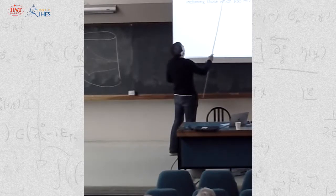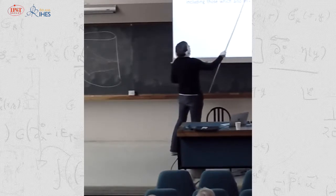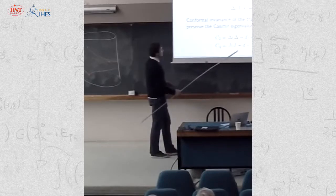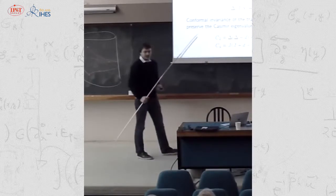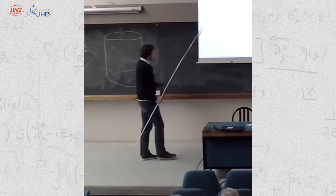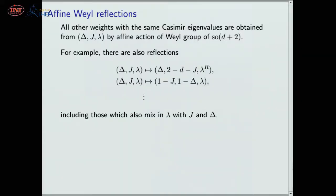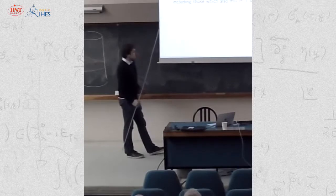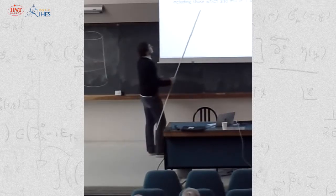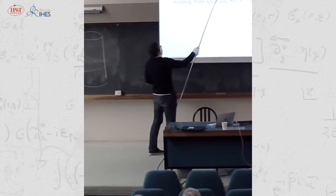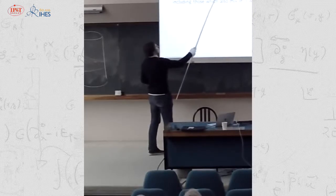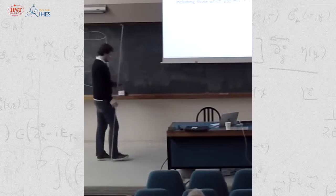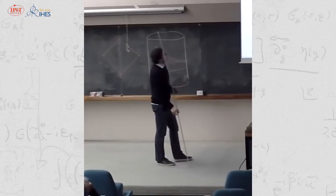For any particular dimension, the Weyl group is some particular finite group and we can go through the list of all elements and write the corresponding transformations. For example, one transformation doesn't change Δ and λ but changes j by sending it to 2 minus d minus j. There is also a more interesting reflection that swaps Δ and j. There are many more, and the number depends on spacetime dimension; some include reflections that mix components of λ with Δ and j.